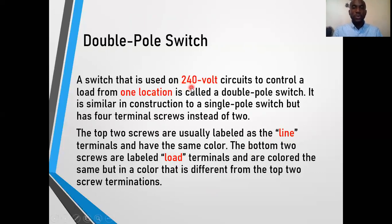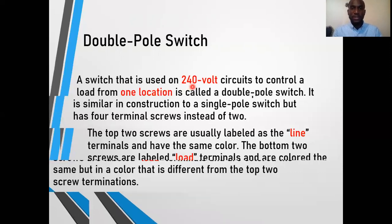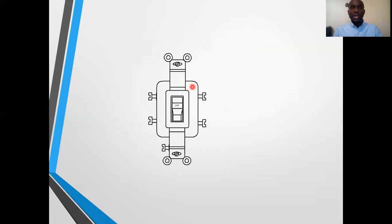240 volts requires two main hot wires, and in this case each hot wire would be supplied a voltage of 120 volts. Combined they would provide 240 volts. Now let's look at the parts of the double-pole switch.